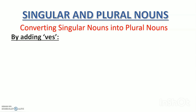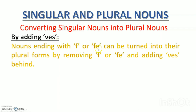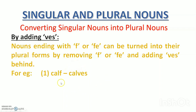Now let's learn the next way of converting singular nouns into plural nouns — that is by adding VES. Nouns ending with F or FE can be turned into their plural forms by removing F or FE and adding VES behind. For example, calf — gaay ka bachara; one calf, many calves. F has been removed and VES put in its place. Half — aadha; if there are many halves, in place of F, VES again.